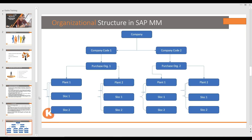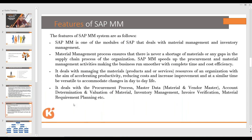The features of SAP MM: SAP MM deals with materials management and inventory management. The materials management process ensures there is never a shortage of materials or gaps in the supply chain. If stock falls below the minimum stock level, there are automatic processes in SAP MM to maintain maximum stock levels. The system can automatically create a purchase order from a purchase requisition through Materials Requirement Planning.